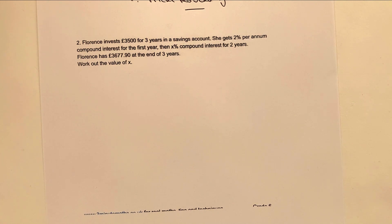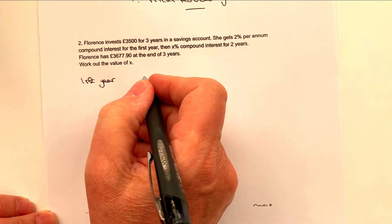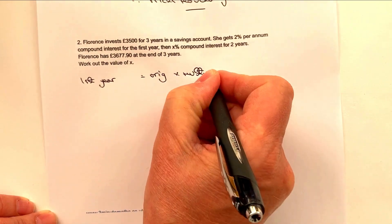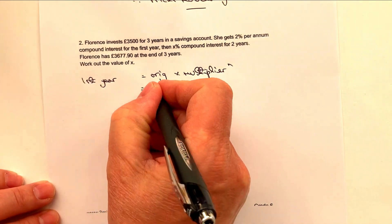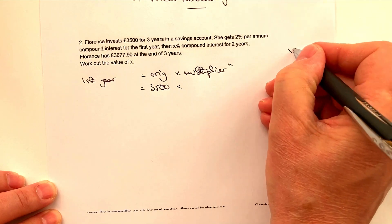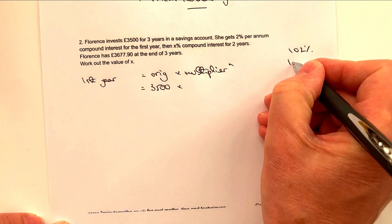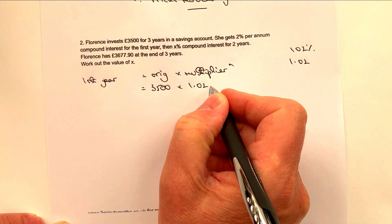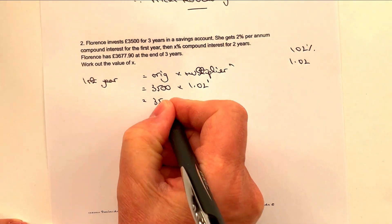Florence invests $3,500 for three years in a savings account. She gets 2% for the first year, then X% compound interest for two years after that. Let's look at what happens at the end of the first year. The formula is: original multiplied by the multiplier to the power of N. The original is $3,500 and the multiplier for 2% is actually 102% — Florence has 100% of her money in the bank and gets 2% on top — which as a decimal is 1.02.